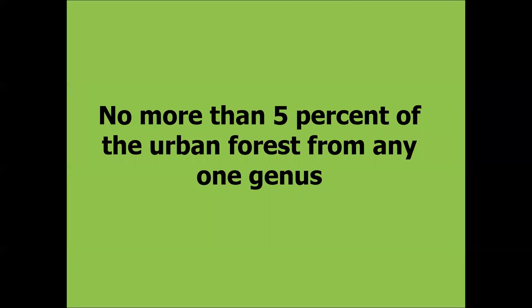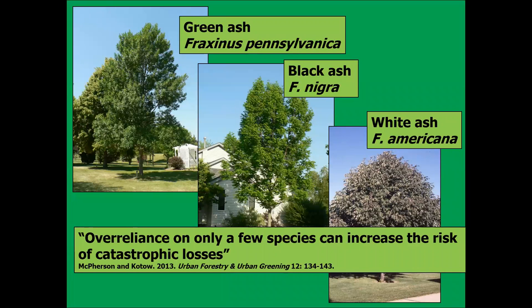My recommendation is no more than 5% of your urban forest from any one genus. If you only had 5% of your urban forest from one genus, exotic threats are not as serious. If you say, well, I've got diversity — I only have 10% as green ash, 10% as black ash, 10% as white ash — even that violates Santamour's no more than 20% in a genus. The over-reliance on only a few species, particularly a few species in a genus, is certainly going to increase the risk of catastrophic losses, as we've already seen with ash and elm.